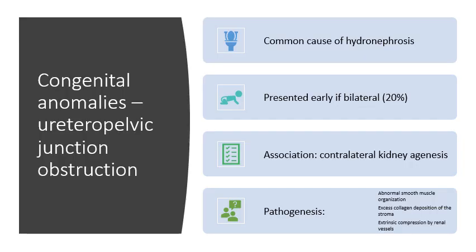Next, we go for the congenital anomaly of ureteropelvic junction obstruction. This is an anomaly that occurs just after the renal pelvis converges into the ureter, where there is some stricture or obstruction. Congenitally, it can be caused by a few causes.